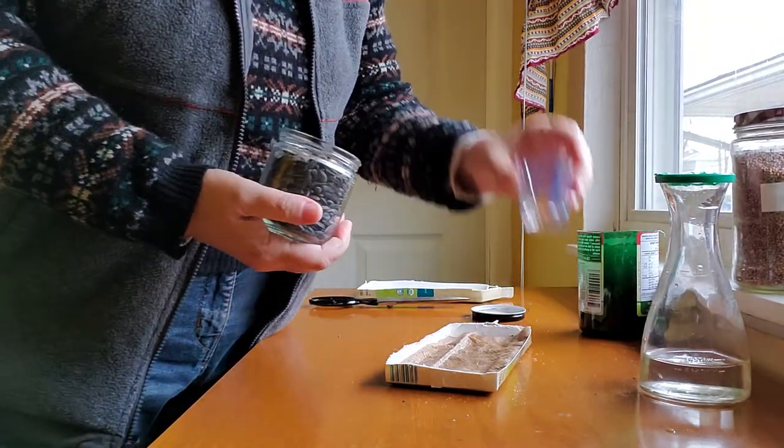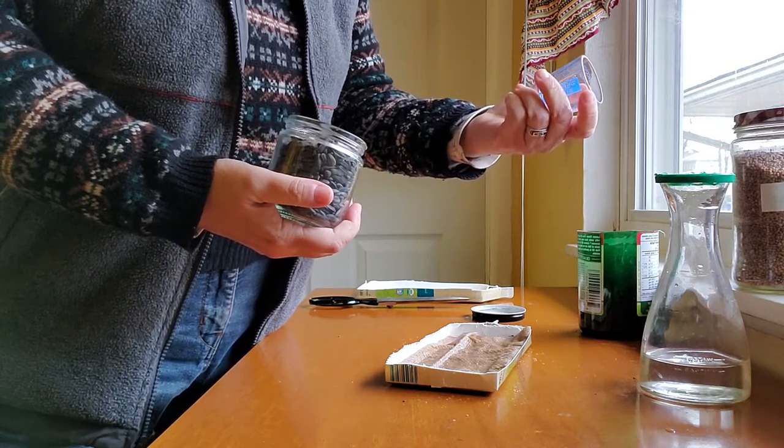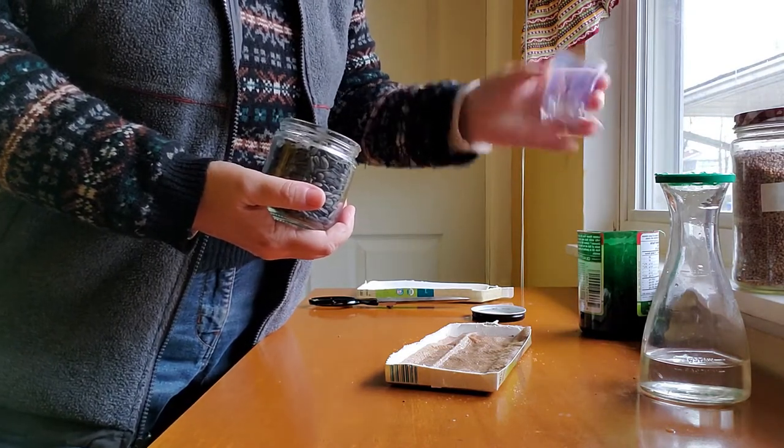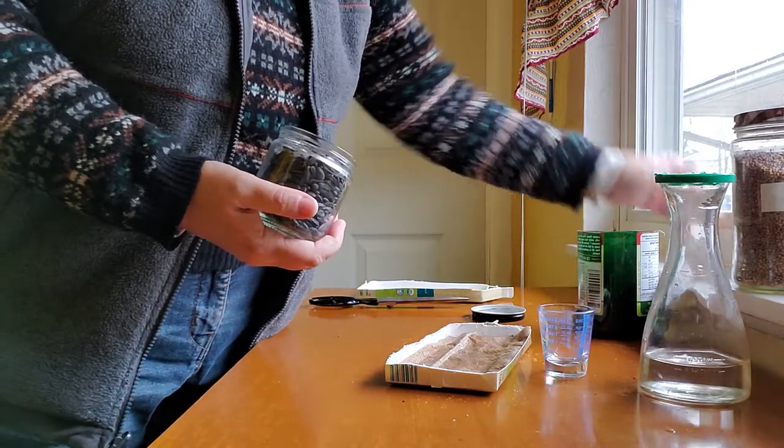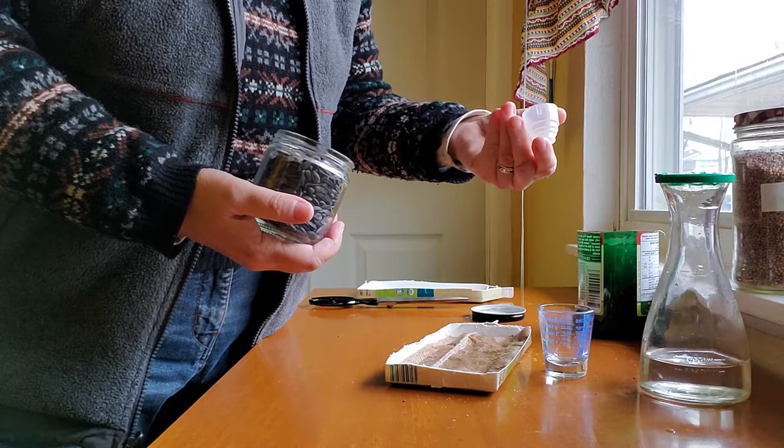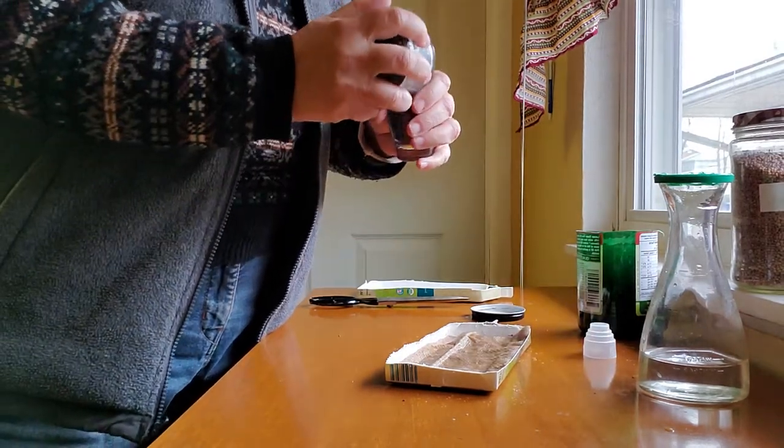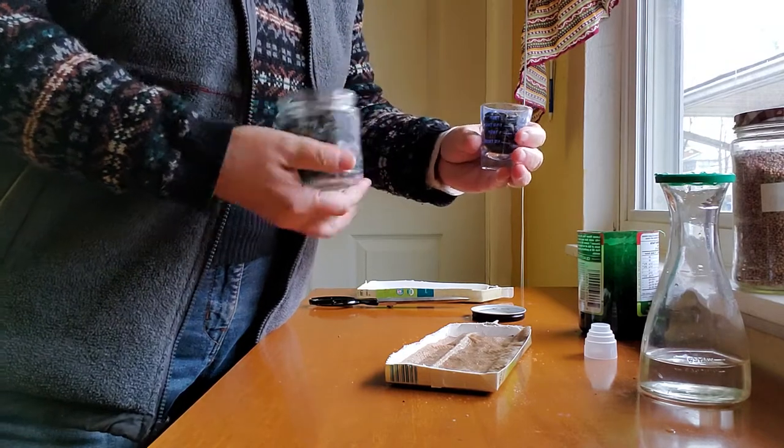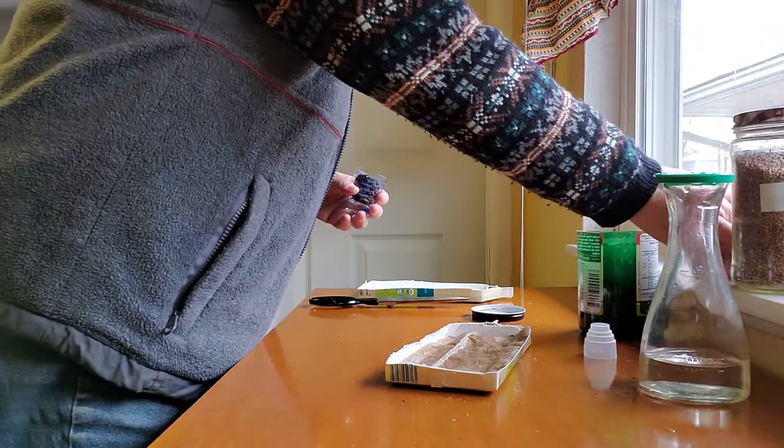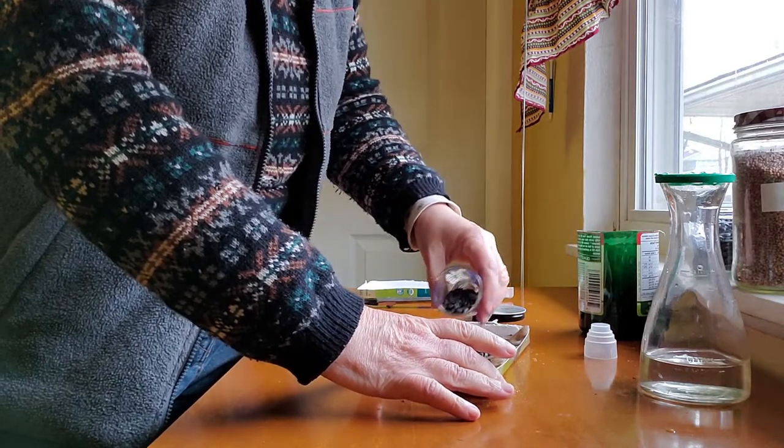I have a couple of measuring cups. This is a little shot glass but it has measurements on it. So two tablespoons is about what I'll use. I have another little plastic measuring cup that's one tablespoon for smaller seeds. I'm going to sprinkle about two tablespoons of the sunflower seeds over the top.